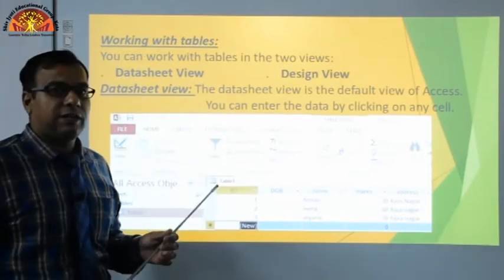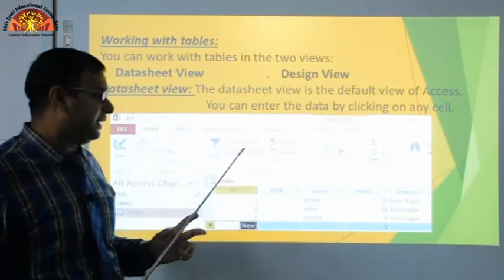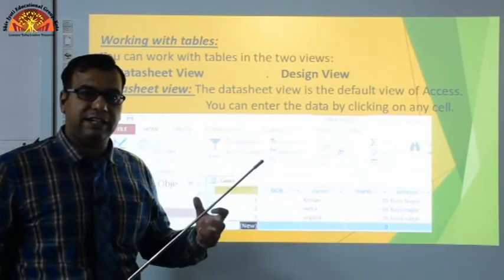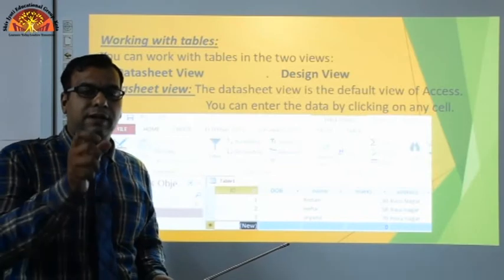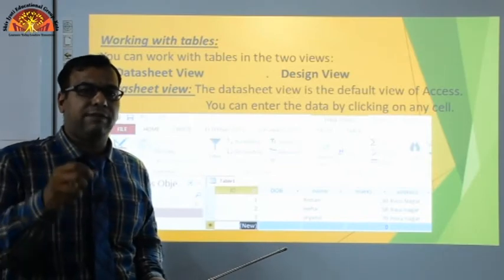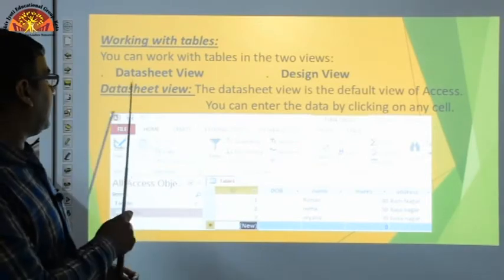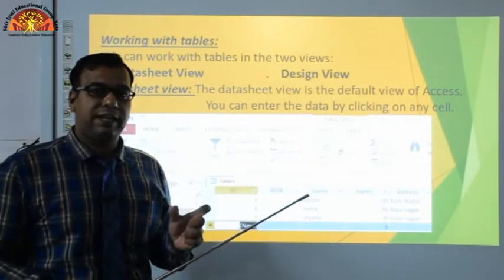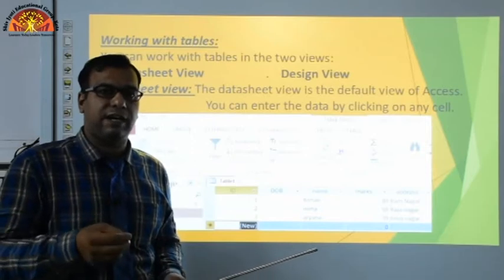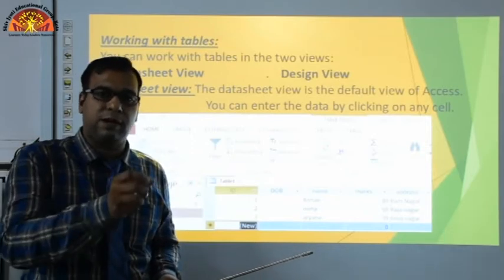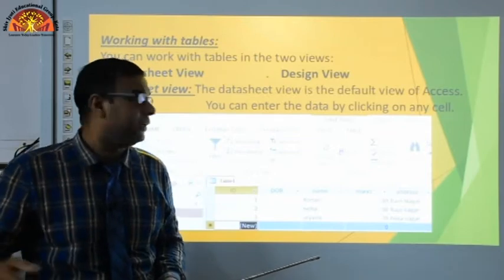In Datasheet View, the table is shown in a format where you can enter data directly. For example, if you have a table with roll number, name, marks, and subjects, you enter the roll number in the roll number column, marks in the marks column, and so on.